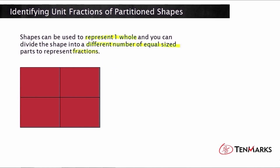Let's say you choose a triangle and you divide it into two parts. So say I have a triangle here, and I divide it directly down the middle. This isn't exactly equal, but let's pretend for a moment that it is. So if I have two parts, that means each part represents one-half of the entire triangle. So now I've used a shape to find a unit fraction, and a unit fraction always has one as the numerator.